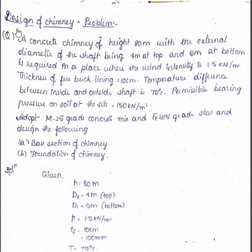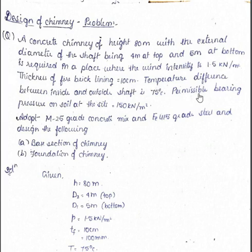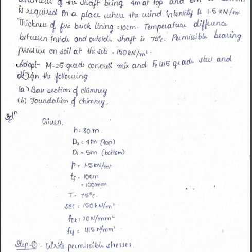Let me read the question. A concrete chimney of height 80 meters with external diameter of the shaft being 4 meters at the top and 5 meters at the bottom is required in a place where wind intensity is 1.5 kilo Newton per meter square. Thickness of the fire brick lining is 10 cm, temperature difference between inside and outside of the shaft is 75 degrees centigrade, permissible bearing pressure on soil is 150 kilo Newton per meter square. Adopt M25 grade concrete and Fe415 grade steel, and design the base section and foundation of the chimney.